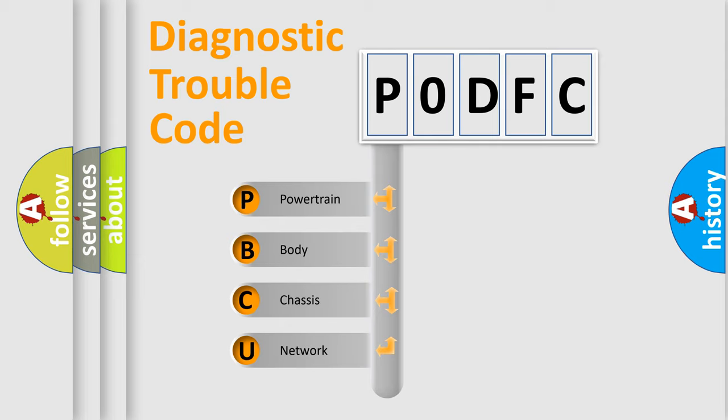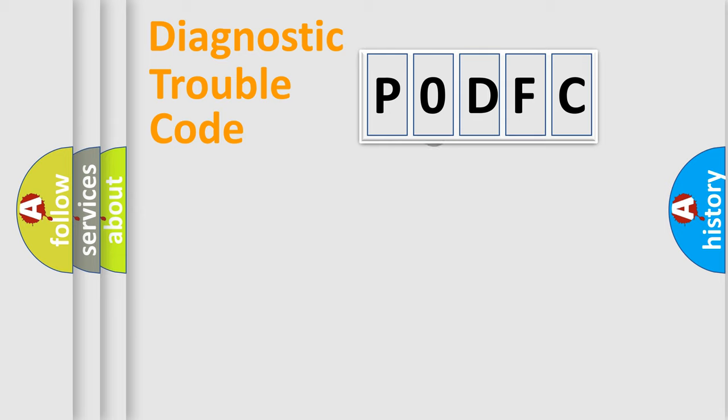We divide the electric system of automobiles into four basic units: Powertrain, Body, Chassis, and Network. This distribution is defined in the first character code.